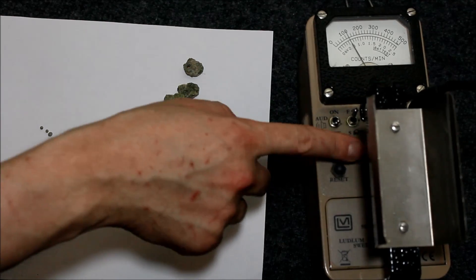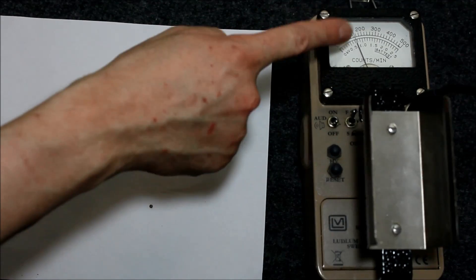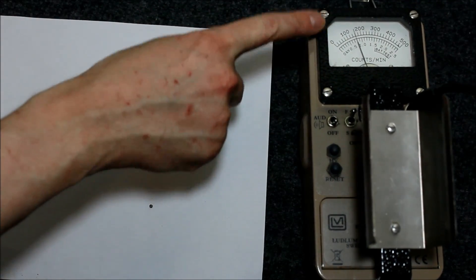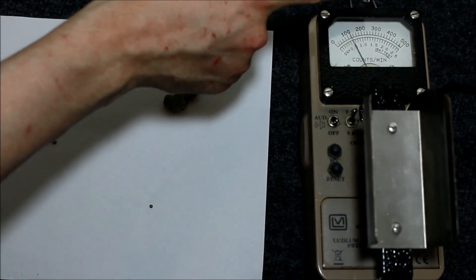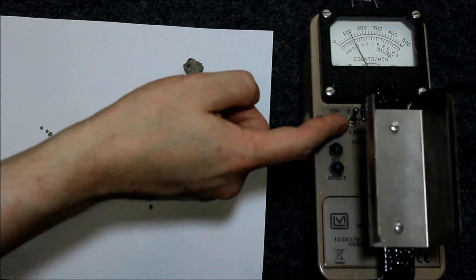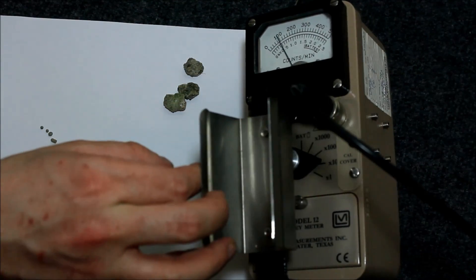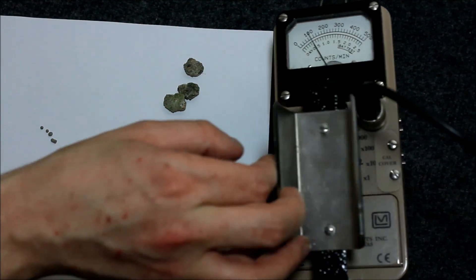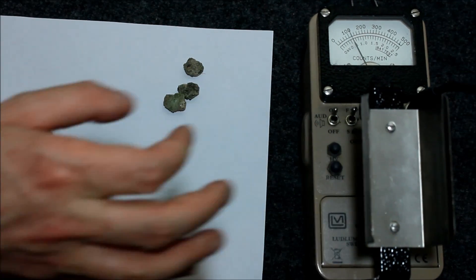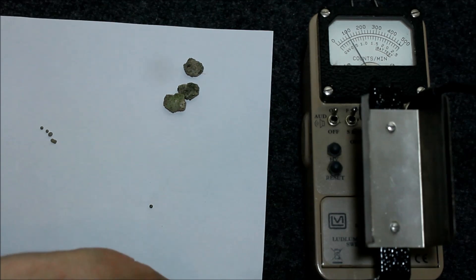So we have this guy right here, the scintillation counter, set on the x10 scale. So everything you see reading on the screen here is x10. 0, 1000 counts, 2, 3, 4, 5,000 counts per minute, okay? So let's cut the sound on. And as you can see our background is around just about 1000 counts per minute. It's one of the lowest places in the entire house. So let's take this and see what we get.